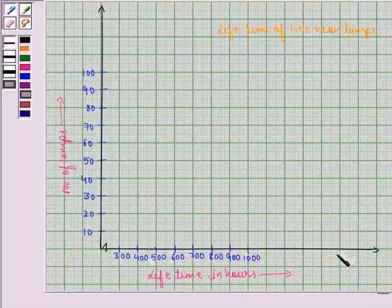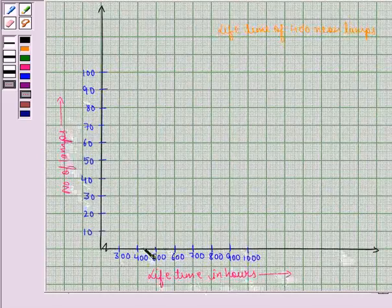Now this is the graph here where x-axis is lifetime in hours and on the y-axis we have number of lamps. Now this graph shows the lifetime of 400 neon lamps. Now we will start making a histogram.